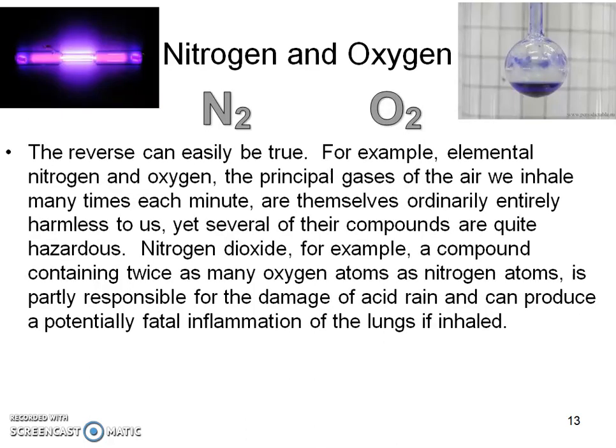Let's look at these two elements: nitrogen and oxygen. Notice those twos — those twos tell us that these two elements exist as diatomic molecules. The reverse can easily be true. For example, elemental nitrogen and oxygen, the principal gases of the air we inhale many times each minute, are themselves ordinarily entirely harmless to us, yet several of their compounds are quite hazardous. Nitrogen dioxide, for example — a compound containing twice as many oxygen as nitrogen — is partially responsible for the damage of acid rain and can produce a potentially fatal inflammation of the lungs if inhaled. This is the exact opposite of what we just talked about: nitrogen and oxygen by themselves are harmless, but put them together as a compound and it's very dangerous.